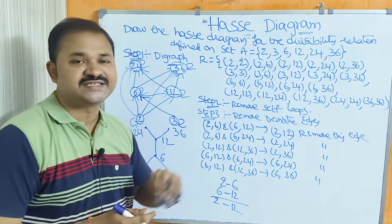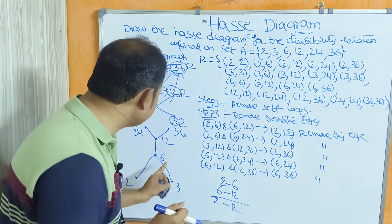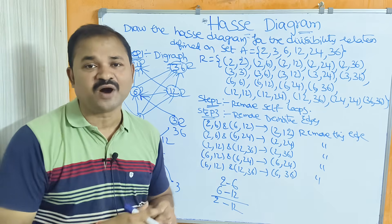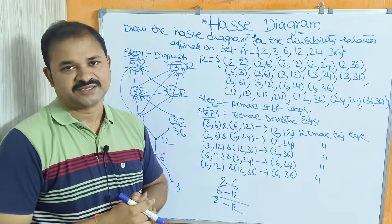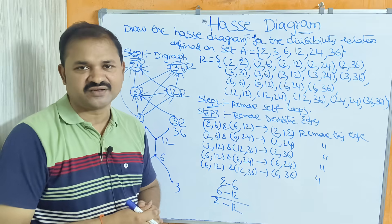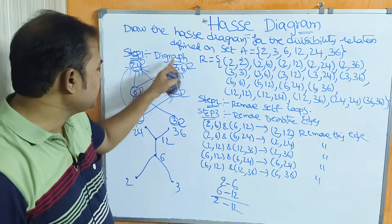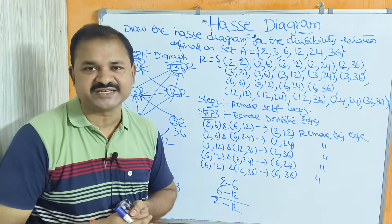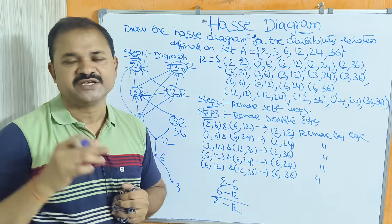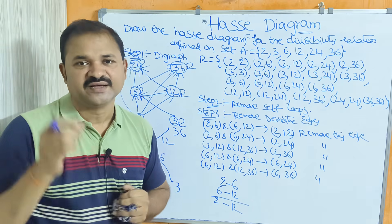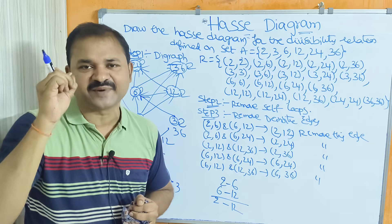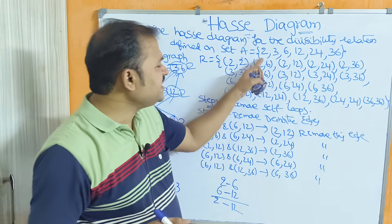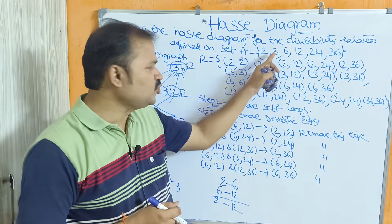To construct the Hasse diagram we need to follow the six steps. In an examination you can directly construct the Hasse diagram first, and then write the steps afterward depending on the marks — this is a backward approach. Step one is to first establish the relation. Here the relation is divisibility. We know 2 does not divide 3, but 2 divides 6, 12, 24, and 36.